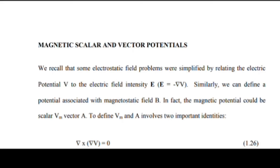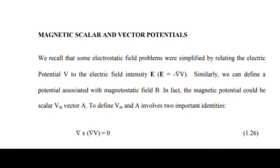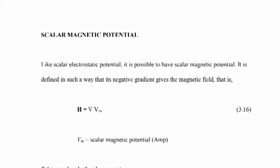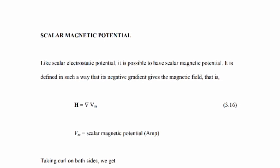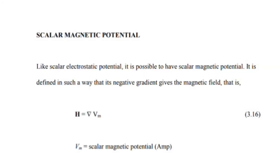To define Vm and A — scalar potential and vector magnetic potential — two important identities are used. With scalar electrostatic potential as analogy, it is possible to have scalar magnetic potential. It is defined in such a way that its negative gradient gives the magnetic field, that is H equal to minus del Vm, where Vm is known as scalar magnetic potential. H is the magnetic field intensity or magnetic field strength.